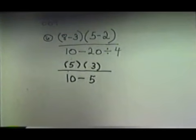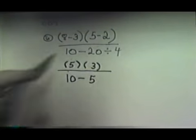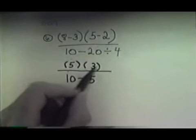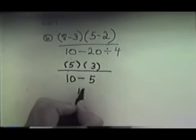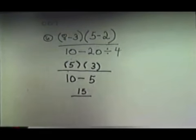So on the bottom, I have 10 subtract 5. On the top, I have 5 and then 3. Now when those two are written side by side like that, it means for us to multiply. So we'll have 15 on top. On the bottom, we have 10 minus 5, which is 5. So we have 15 over 5. Well, that means 15 divided by 5. So we come up with an answer of 3.